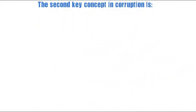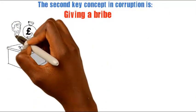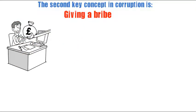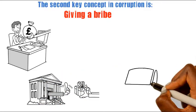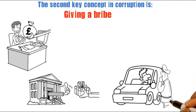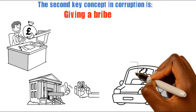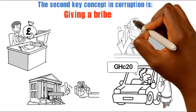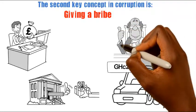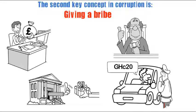The second key concept in corruption is giving a bribe. The person who promises or gifts a civil servant in order to influence him not to perform his functions, or to perform them in a certain way, is also guilty of giving a bribe. In the example above, Selassie, by agreeing and giving out the 20 Ghana cedis to the policeman, has committed the offence of giving a bribe. The policeman would have processed him to court if he refused to pay — that was the right thing to do.